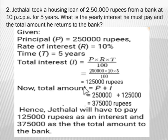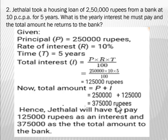Now we find the total amount: total amount = principal + interest = 2,50,000 + 1,25,000 = 3,75,000 rupees. Hence Jethalal will have to pay 1,25,000 rupees as interest and 3,75,000 rupees as the total amount to the bank.